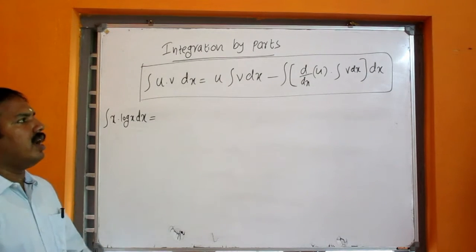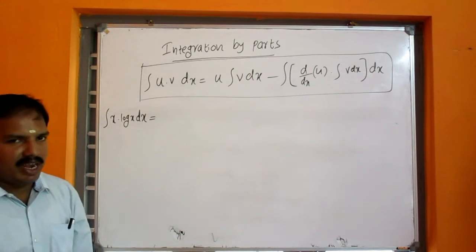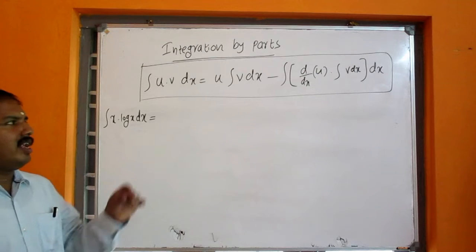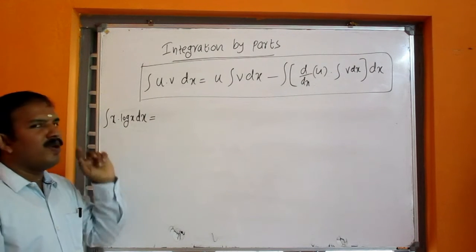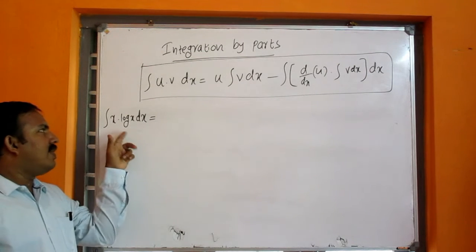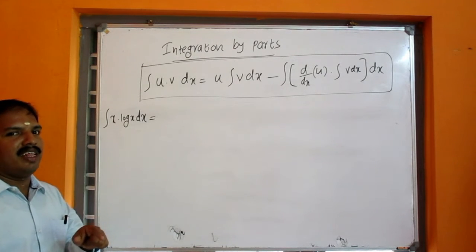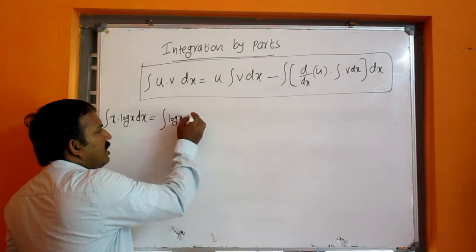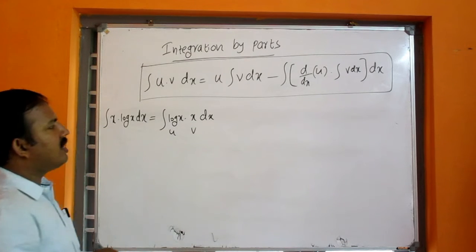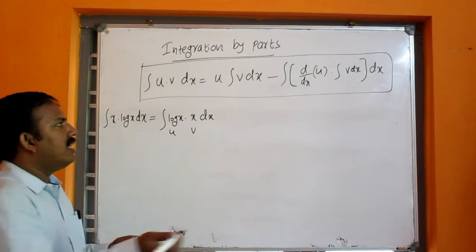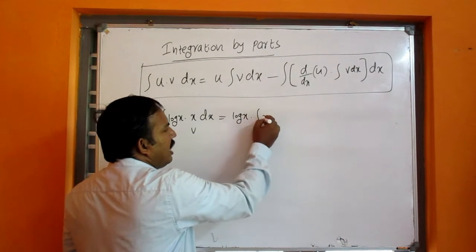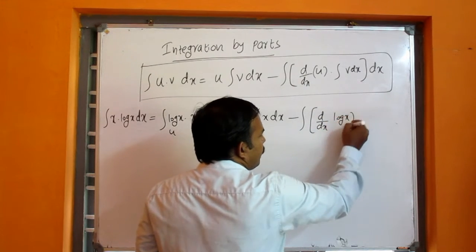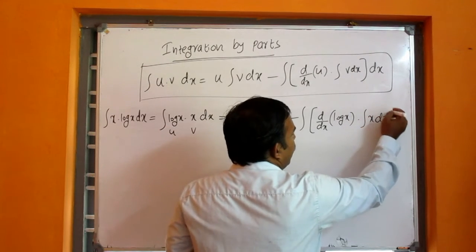If we need to do this, integral u v dx equals u integral v dx minus bracket. That is, d by dx of u into integral v dx. This bracket is closed with dx. Let's look at the rule. x log x — okay, x log x is equal to the rule. Then we will start here: integral of log x into x dx. Then u is log x, v is x.